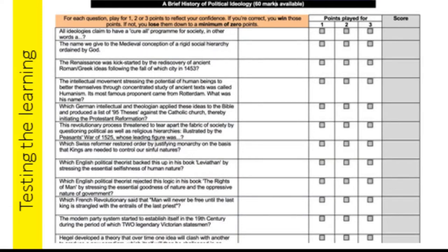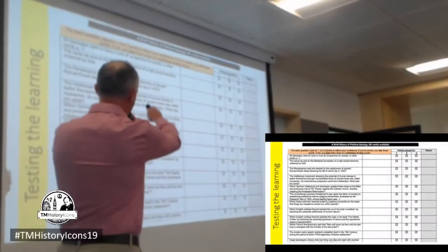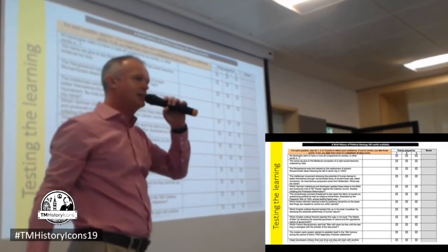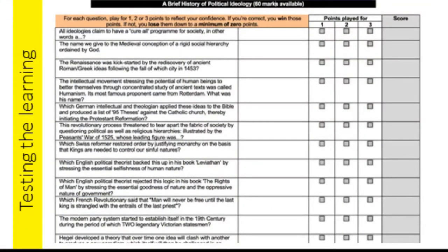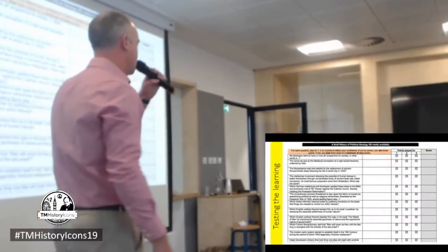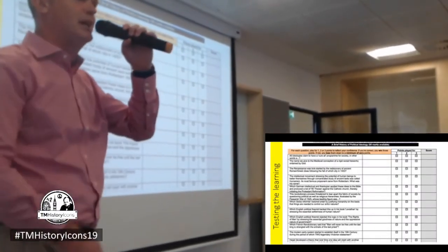You can download this from my blog. All you basically have is a standard factual test, but on the right-hand side the students have to nominate how many points they are playing for. If they play for one point, they only get one point. If they play for three, they'll get three points. But if they get it wrong, they lose the same amount of points. So you're testing the depth of their knowledge, how confident they are, how secure they are in their knowledge. It kind of dissuades them from guessing any of the answers too.